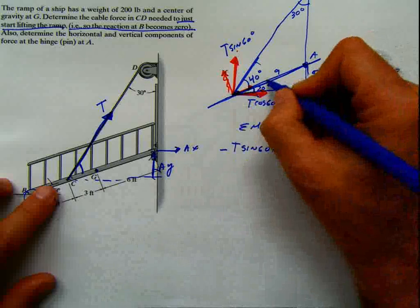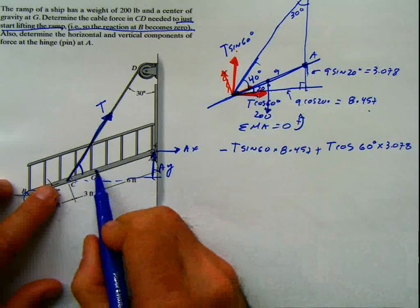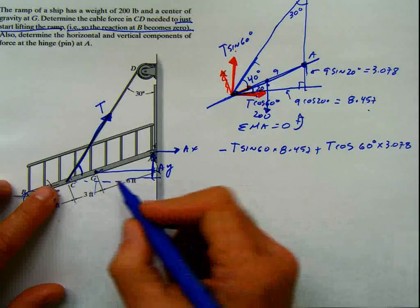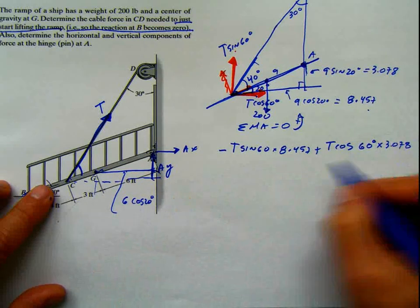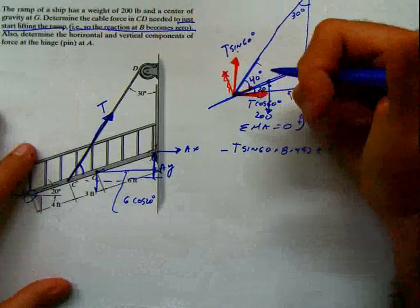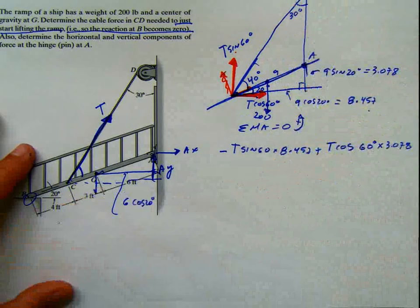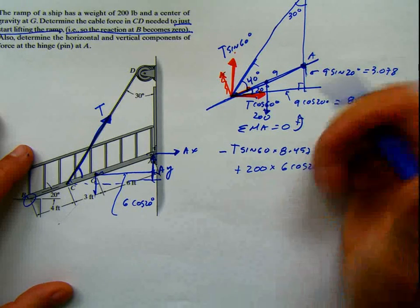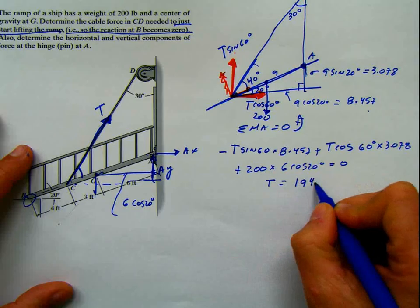I'm also missing the weight contribution. At G, I have weight 200 pounds. The distance between this and this: the force is vertical, so the distance must be horizontal — that's 6 times cosine of 20 degrees. This acts downwards and is going to be positive with respect to this point. So the equation is: T sine 60 times 8.457 minus T cosine 60 times 3.078 plus 200 times 6 cosine 20 = 0. Solving gives T equal to 194.92 pounds.